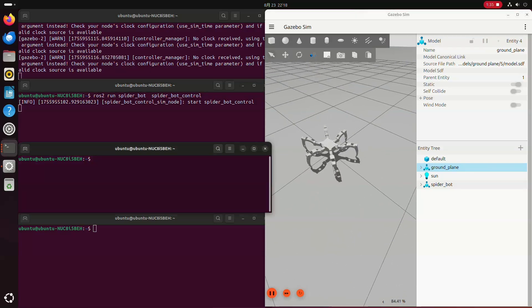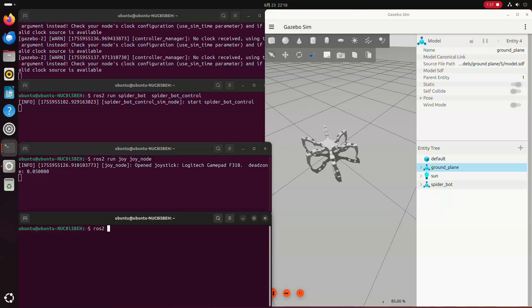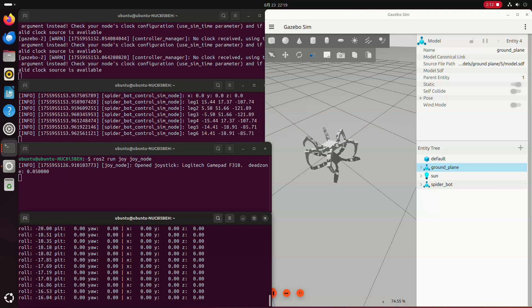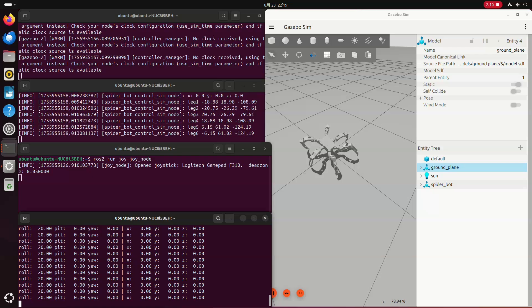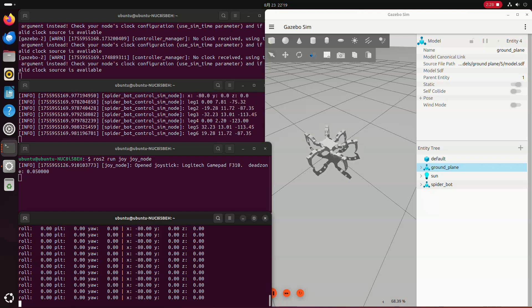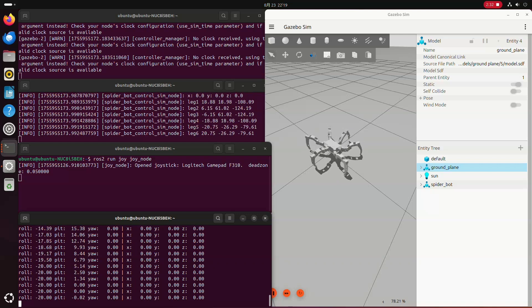On third terminal, I run ros2 run joy joy node to get joystick value. And on last terminal, I run ros2 run spiderbot joy to command. Then I can send all roll pitch and yaw or XYZ commands to move the body. Once I move the analog stick, you could notice that all the joints are moving correctly. There will be no slip or strange move on the leg. And that is the magic of mathematics.